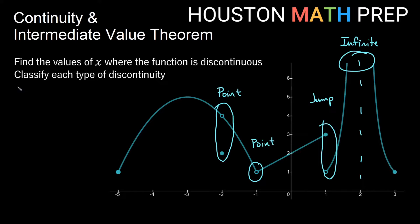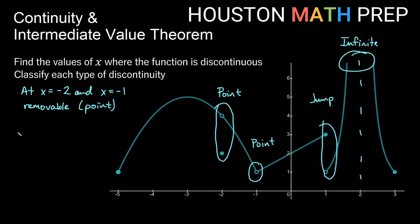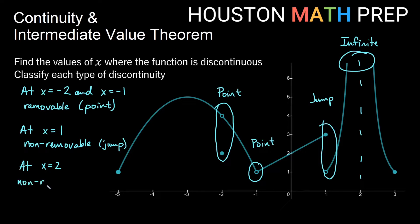Let's classify these. At x equals negative two and x equals negative one, we have a removable discontinuity — that's a point discontinuity. At x equals positive one, we have a non-removable discontinuity, and that is a jump discontinuity. At x equals positive two, we have another non-removable discontinuity — an infinite discontinuity. So the big families are removable and non-removable: if it's a point discontinuity, it's removable; anything else is non-removable.